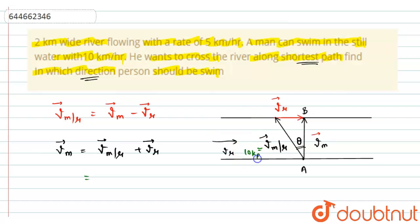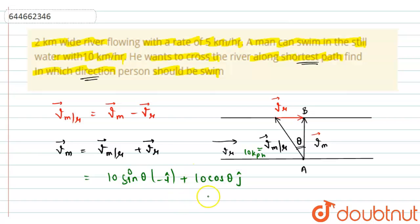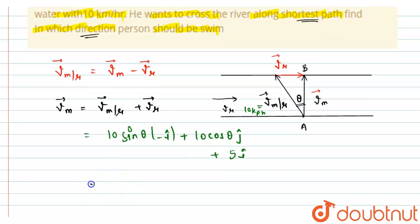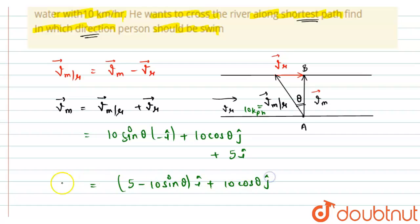The velocity of man with respect to river is 10 kilometers per hour. Along the x-axis, we have the component 10 sin theta in the negative i-cap direction, plus 10 cos theta along j-cap. The velocity of river is in the i-cap direction and equals 5 kilometers per hour, so that is 5 i-cap. From here, we write: (5 minus 10 sin theta) i-cap plus 10 cos theta j-cap.